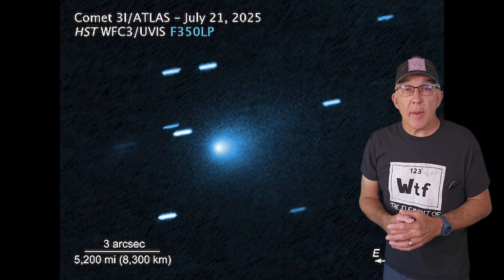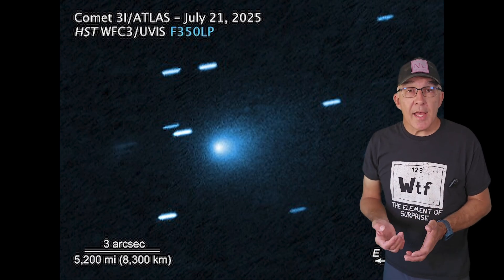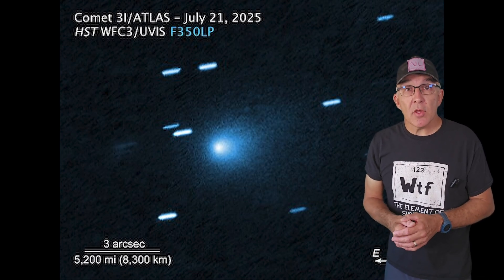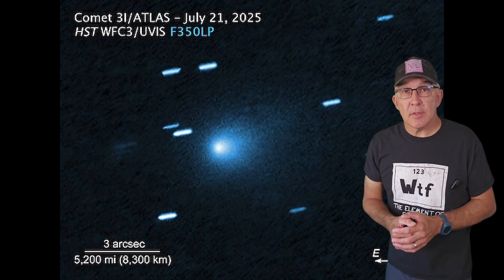One common comment on my previous video was that 3I Atlas wasn't a comet because it didn't look like a comet. Part of that is down to the fact that the tail of the comet is currently very weak and hard to see, although it was observed by the Hubble Space Telescope.